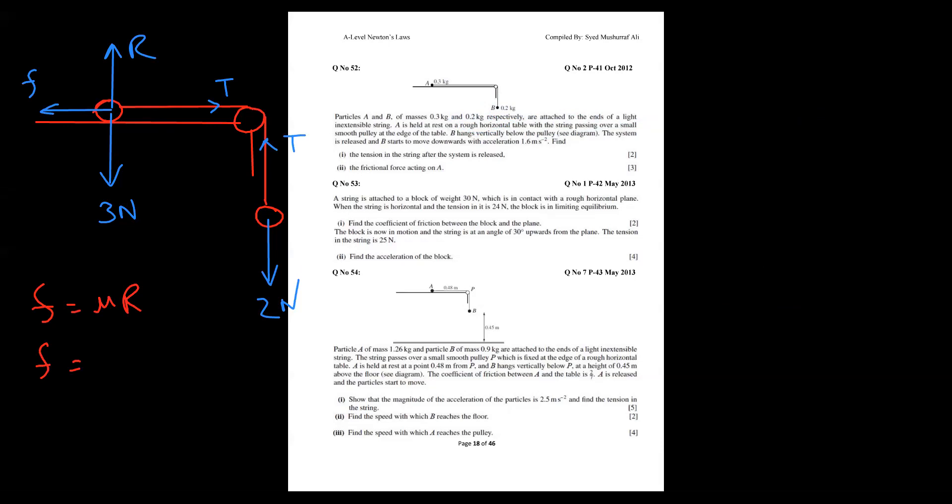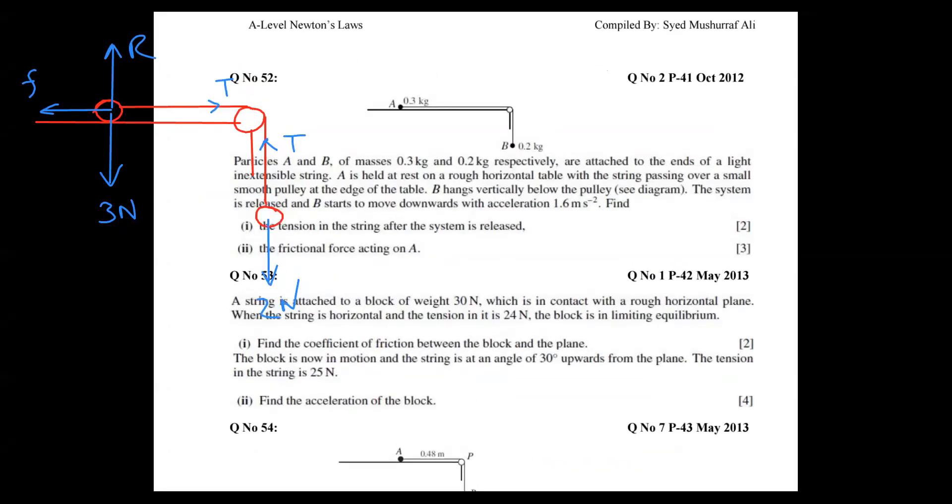Let me check again. Smooth pulley and rough table, and acceleration given is 1.6. So not a hard job, we can start now. I will make two things: one is particle B and one is particle A.